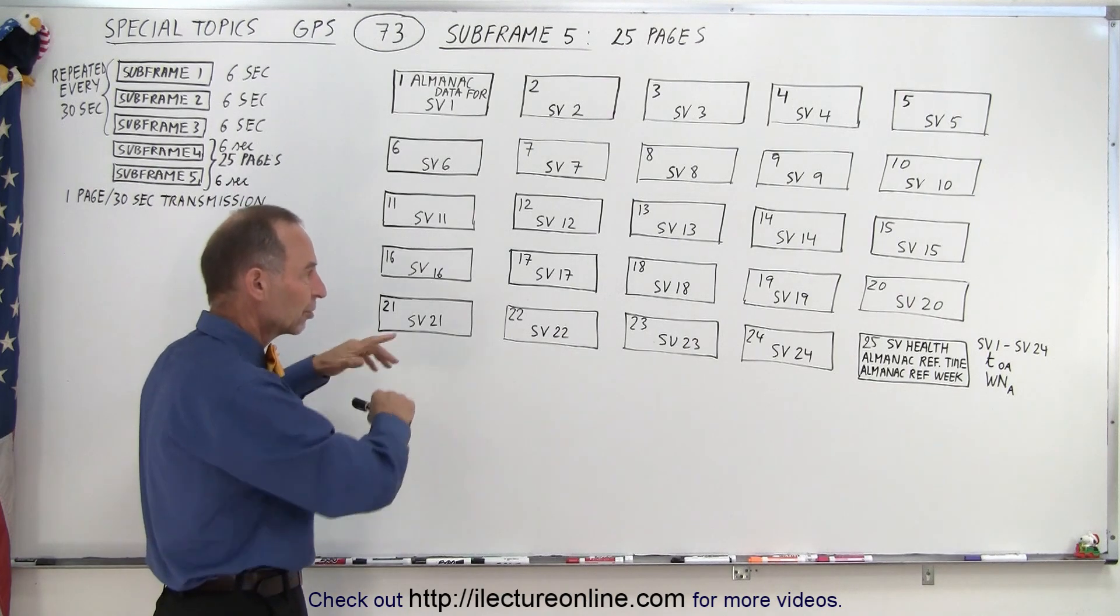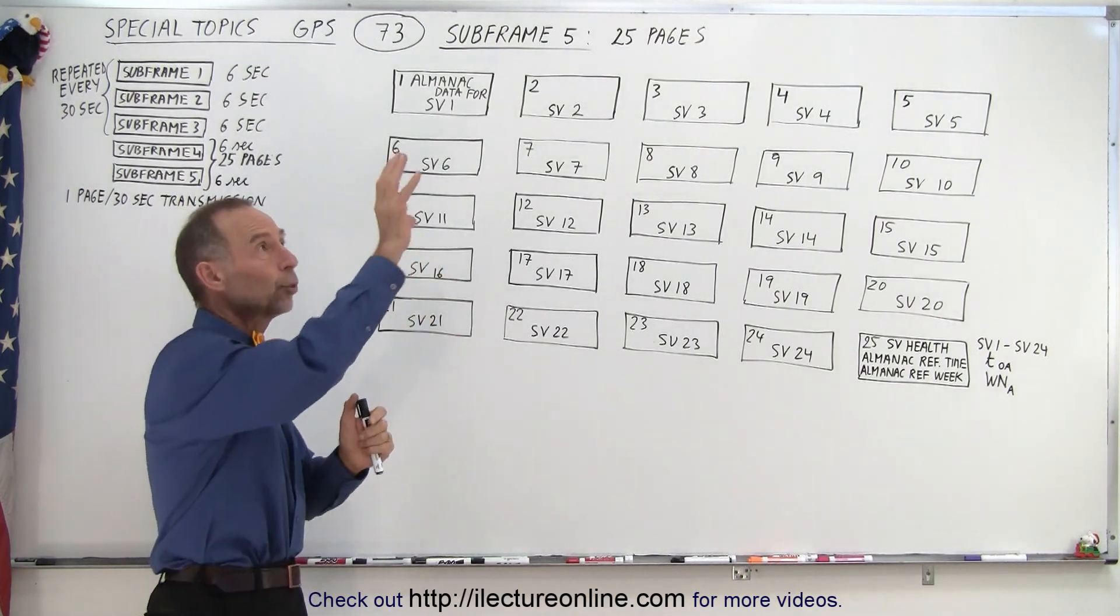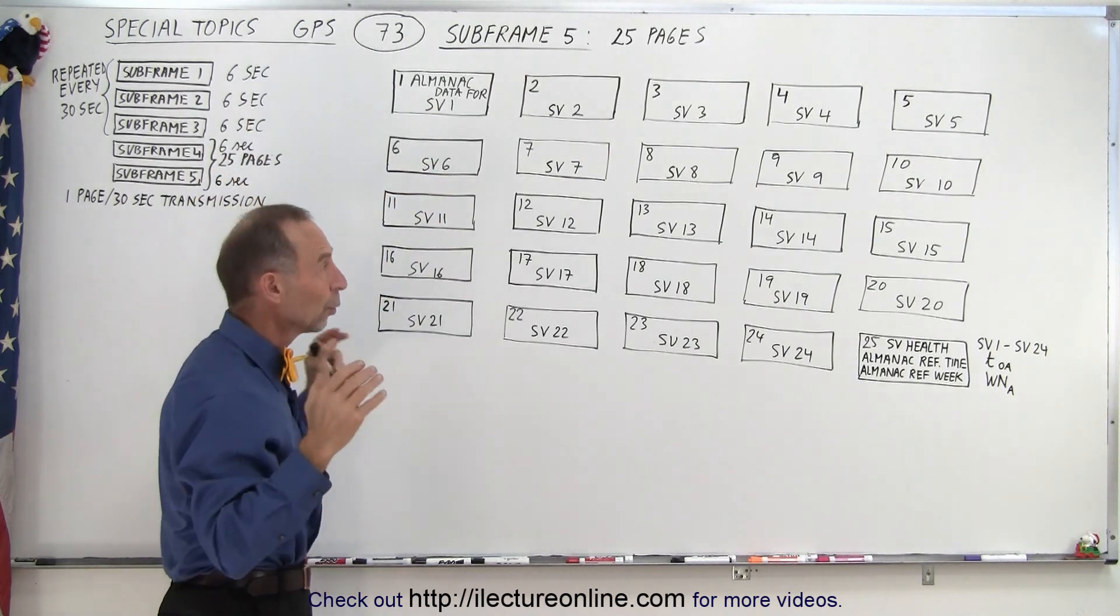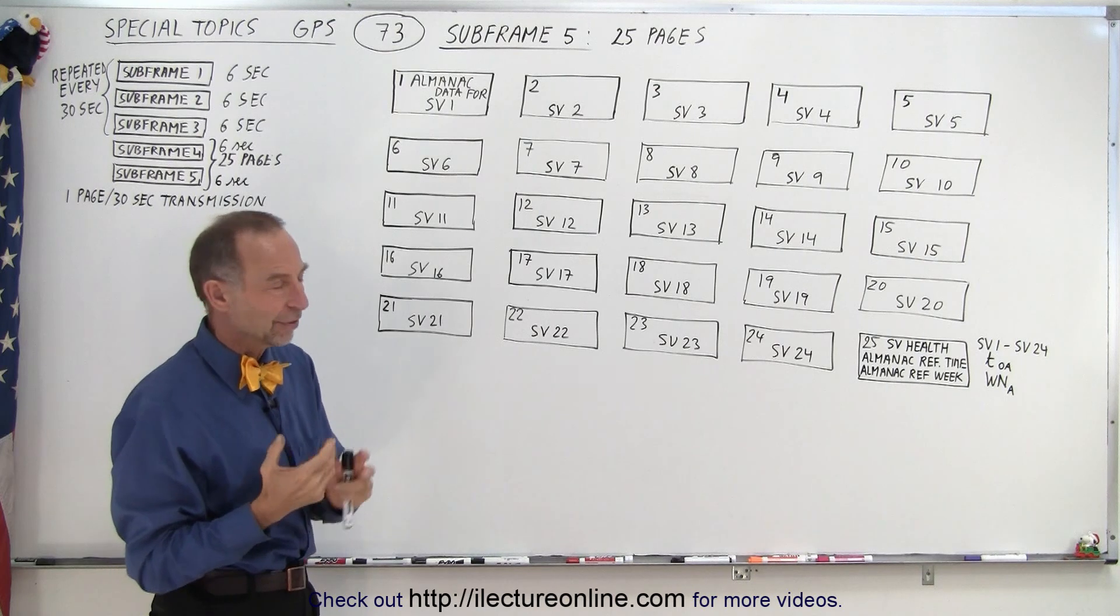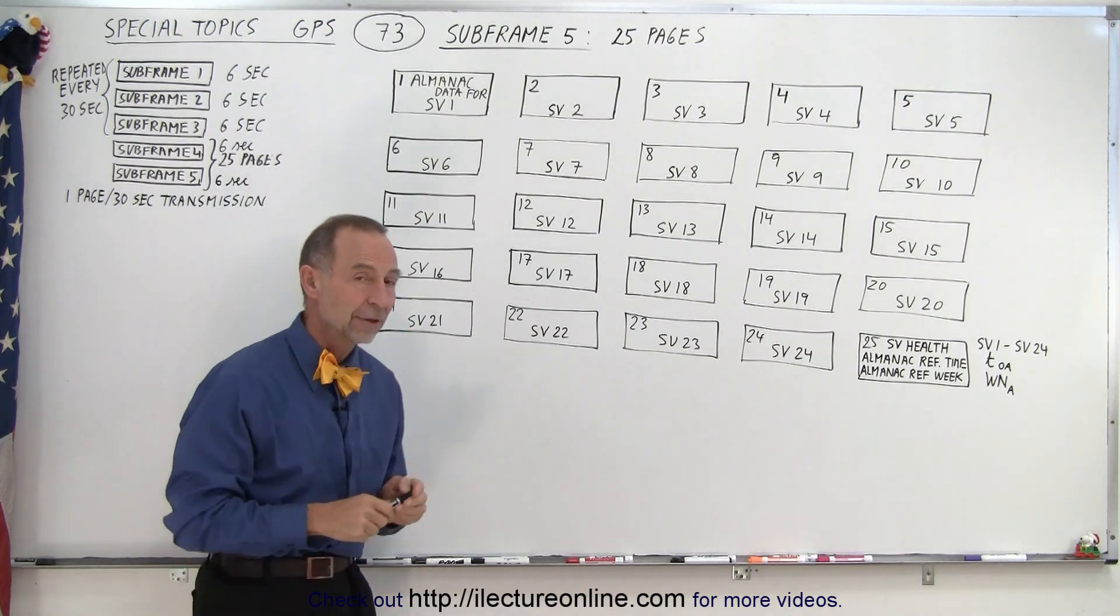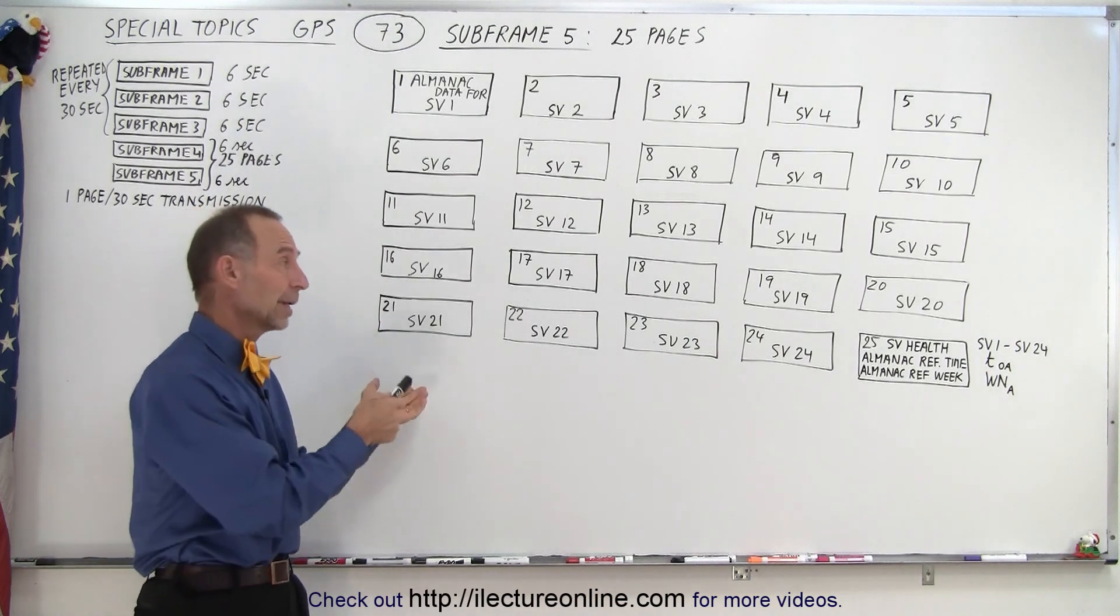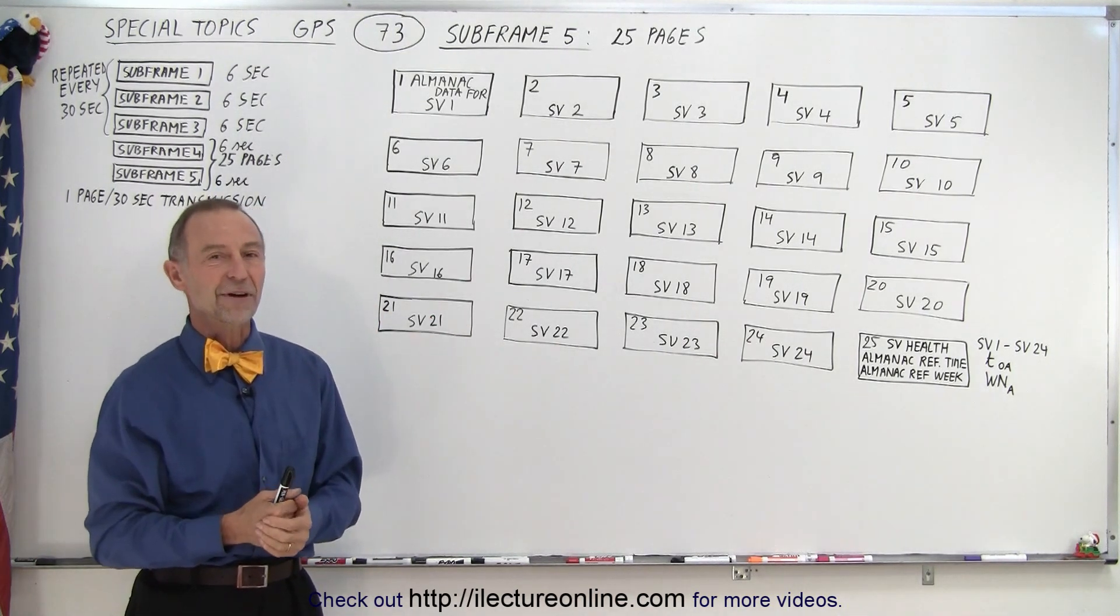This is just to get you into the ballpark. So this information allows a receiver to figure out about where each of the satellites are. Once we lock onto one, then we get the ephemeris data, and then we can figure out exactly where the satellite is to a very accurate amount. So that's the difference between the almanac data and the ephemeris data, and these are the contents of subframe 5.